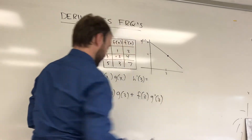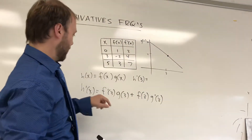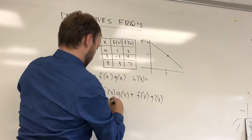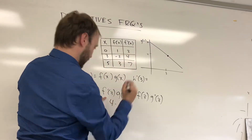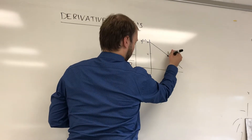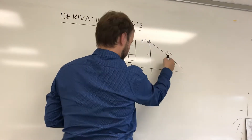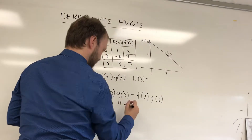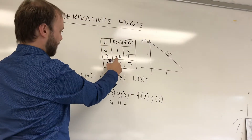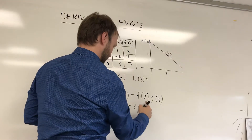The product rule says: take the derivative of the first and multiply by the second, plus the first times the derivative of the second. Then they want me to find h prime of 3. So I substitute 3: f prime of 3 times g of 3, plus f of 3 times g prime of 3. You should make this a separate line in your work — you'll get credit for the derivative and credit for the evaluation step. From the table, f prime of 3 is 4. From the graph, g of 3 is 4. And f of 3 from the table is negative 2.